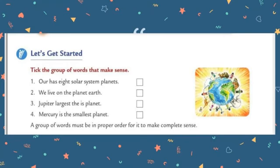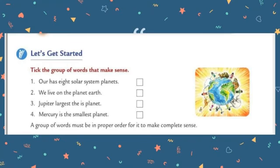The second one — 'We live on the planet Earth' — is a meaningful sentence with all words arranged in proper order, so tick the second box. The third one — 'Jupiter largest the is planet' — words are not in proper order, not a complete sentence, so put a cross mark. The last one — 'Mercury is the smallest planet' — is arranged in proper order and is a meaningful sentence, so put a tick mark on the fourth box.